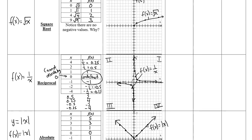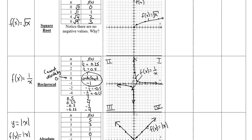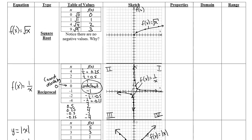Here's what I want you to do: based on the information from those graphs, go ahead and start listing the properties of each. Those properties include the direction it opens, the quadrants it exists in — quadrant 1 up here, quadrant 2, quadrant 3, and quadrant 4 — as well as asymptotes if there are any, lines of symmetry, and then write the domain and range for each parent function. When you're done, play the video to watch as I explain the answers.